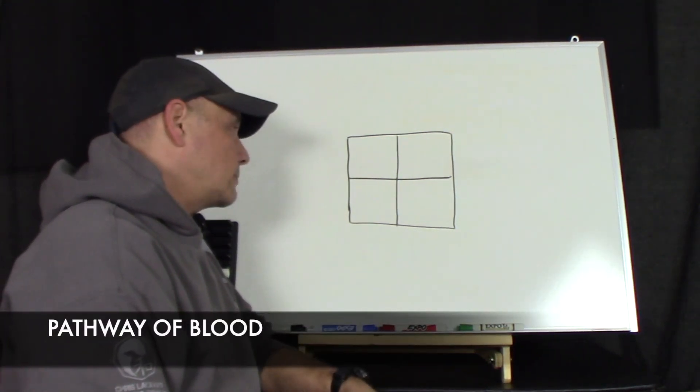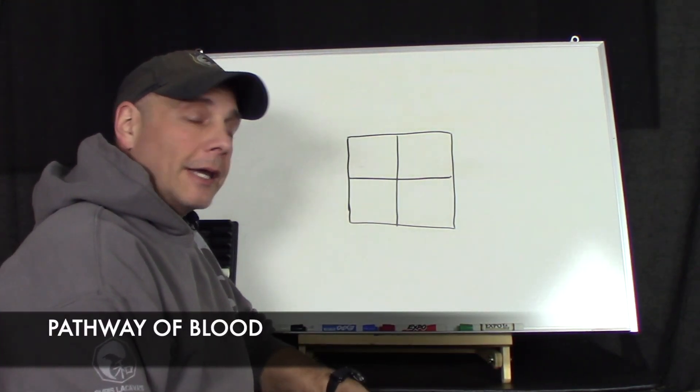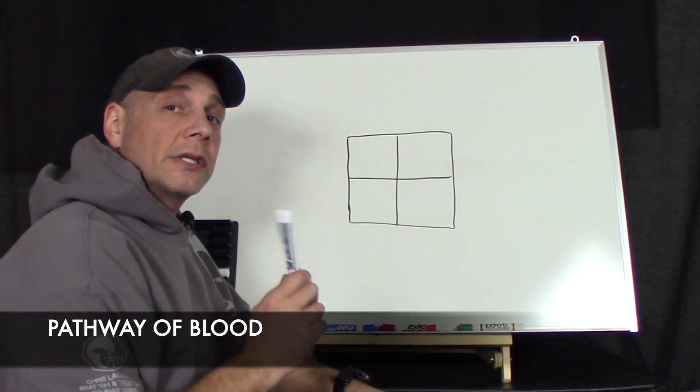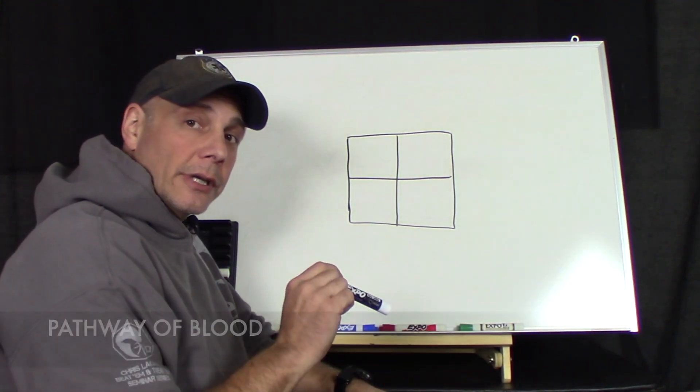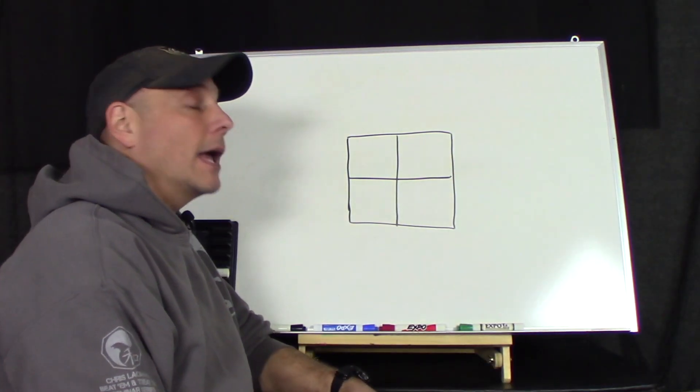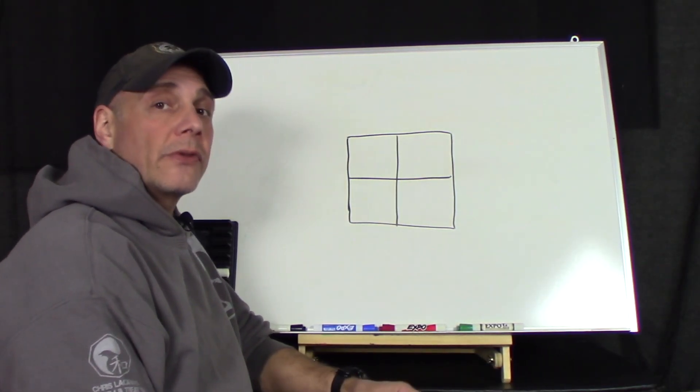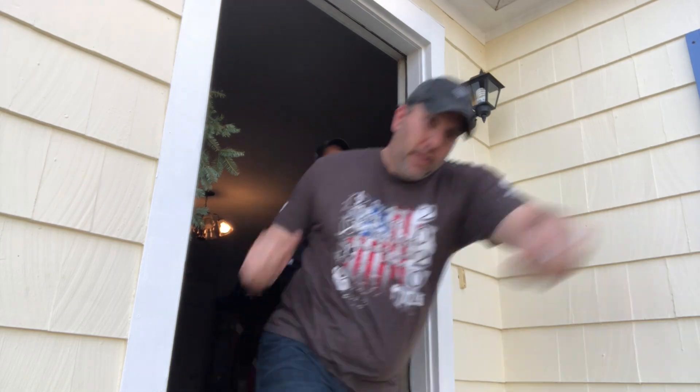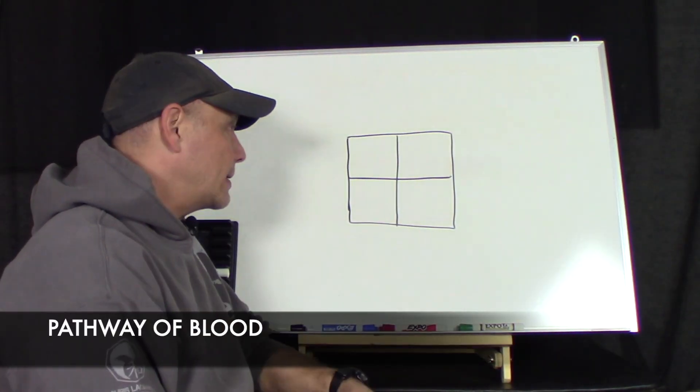So let's talk about blood flow. A tip here is that the blood always goes into the heart into the atria, and always leaves the heart through the ventricle.